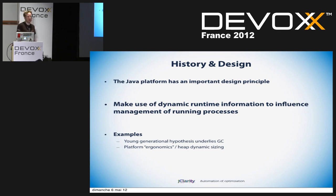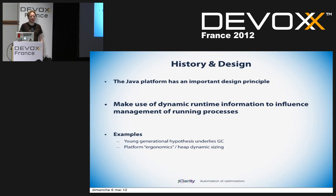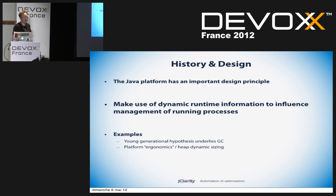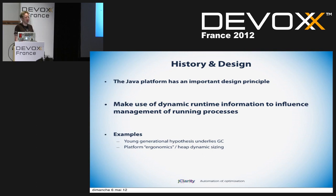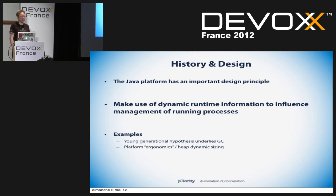A good example is the young generational hypothesis. Hands up if you know what that is. It's just this: virtually all objects die extremely quickly — they're like James Dean, they die young. So if you're going to do a platform which has managed garbage collection, it makes sense to divide your memory space up in such a way that collection of young objects is cheap. That basic insight underlies generational garbage collection and one of the most important aspects of the entire platform.